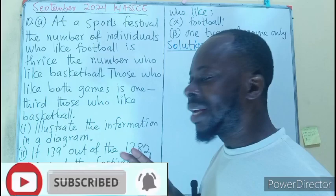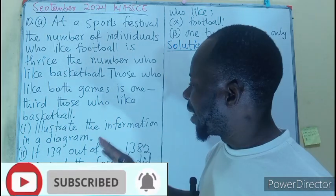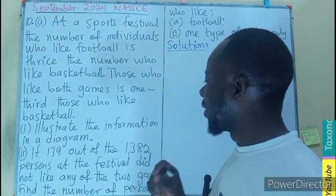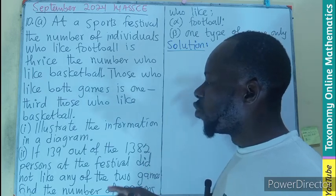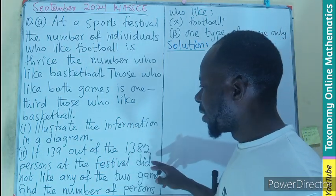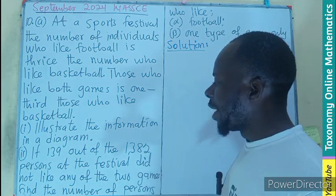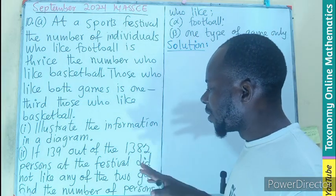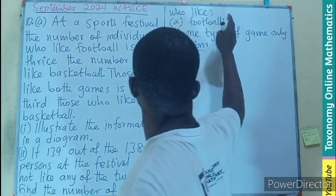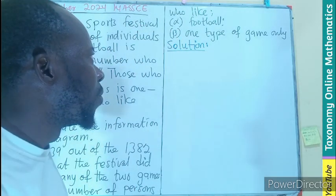We have to illustrate the information in the diagram. Then, if 139 out of the 1382 persons at the festival did not like any of the two games, find the number of persons who like football and one type of game only.